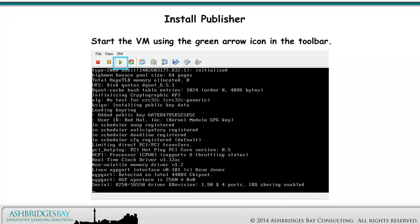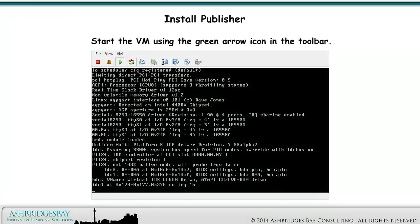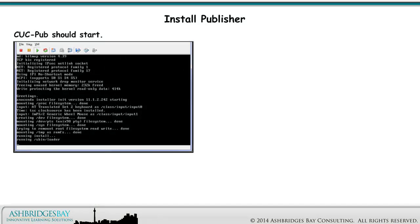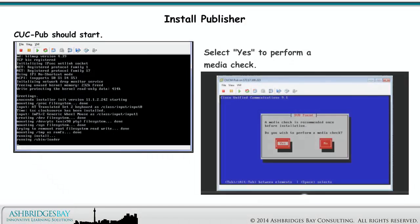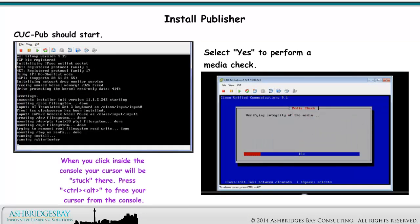Start the VM using the green arrow icon in the toolbar. CUCPUB should start. Select Yes to perform a media check. When you click inside the console, your cursor will be stuck there. Press Ctrl-Alt to free your cursor from the console.